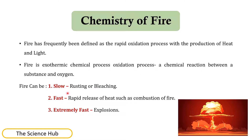Fire can be slow, fast, or extremely fast. Slow fire includes processes like rusting or bleaching. Fast fires involve rapid release of heat such as combustion. Extremely fast fires include explosions.